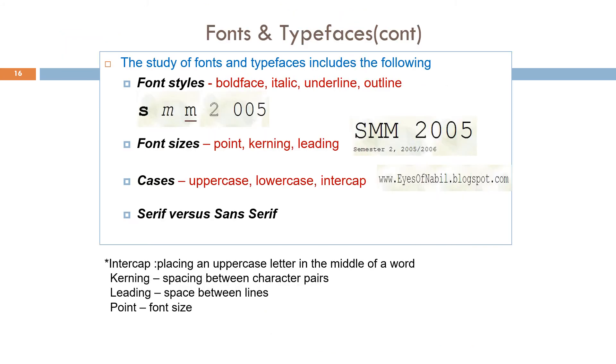The study of font and typefaces includes: first, the font styles, for example boldface, italic, underline, outline. Second, font sizes, consisting of point, kerning, and leading. Point is the font size, kerning is spacing between character pairs, and leading is the spaces between lines. Third, cases: uppercase, lowercase, intercap. Intercap is placing an uppercase letter in the middle of a word. And lastly, serif versus sans serif. Serif fonts have those decorative lines or tapers, also commonly referred to as tails or feet, while sans serif fonts don't.